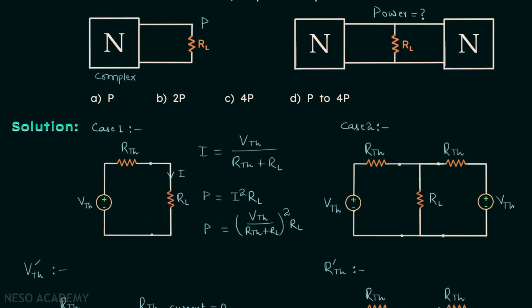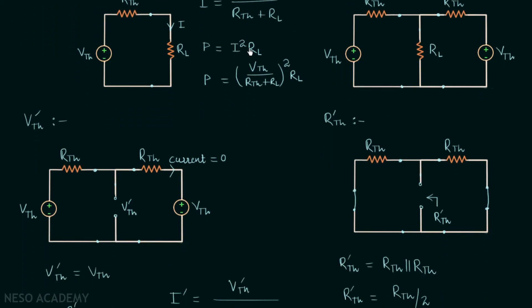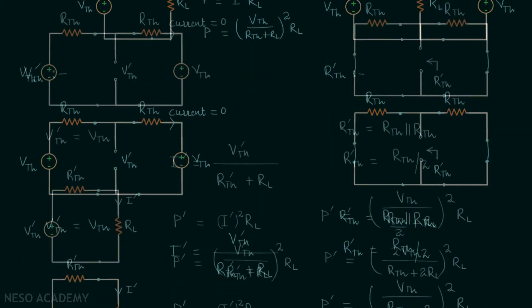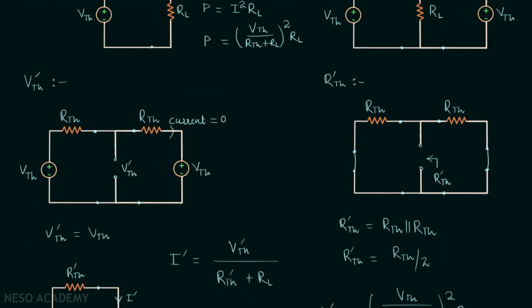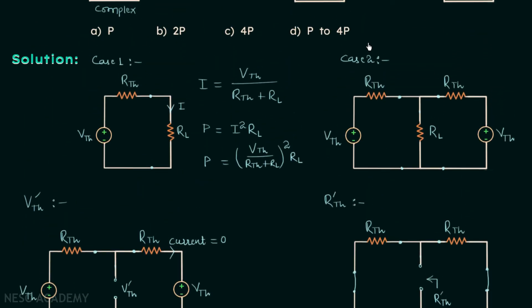Your job is to compare P prime with P and find the correct option — this is your homework. Post your answer in the comment section. That ends this lecture; see you in the next one.